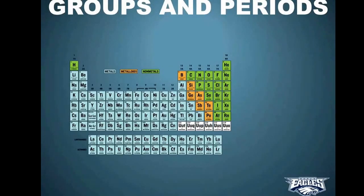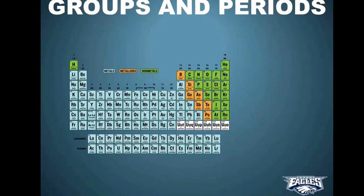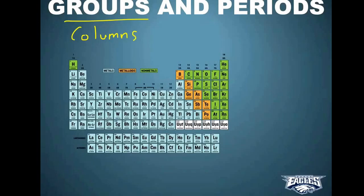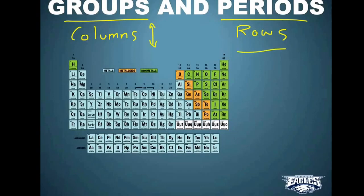The periodic table is organized into groups and periods. Another word for groups would simply be columns — they're the same thing. And another word for periods would be rows. Columns are the up and down, and rows are the left and right. Rows are horizontal, columns are vertical.